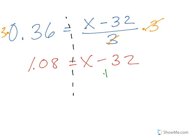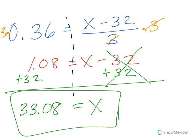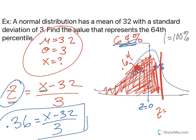Now to undo subtraction, I'm going to add 32 to both sides. These cancel out. I'm left with x equals 33.08. So back to our question. A normal distribution has a mean of 32, standard deviation of 3. The value of 33.08 represents the 64th percentile. We know it has to be, our z-score was positive. And we know that the mean is in the middle. So we knew our value had to be bigger than the mean. I hope you found that helpful.